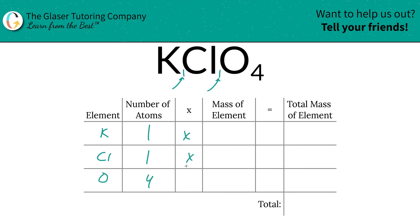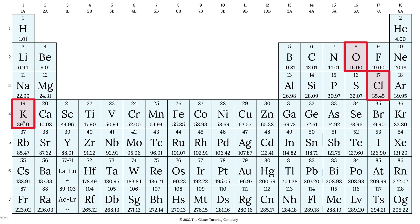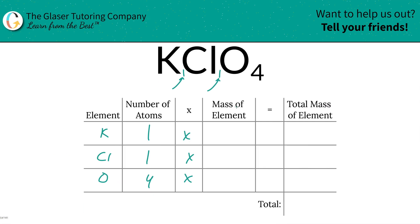We're going to take those number of atoms and multiply by the mass of each particular element. Those masses are found on the periodic table — here's one I've created. That gives us 39.10 for potassium, 35.45 for chlorine, and 16 for oxygen.